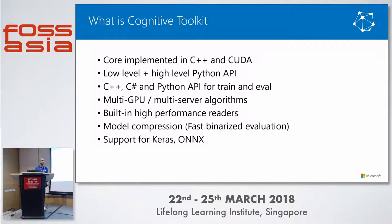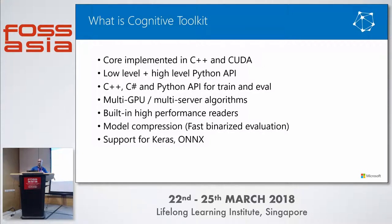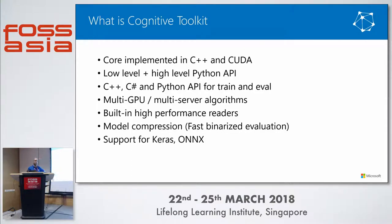CNTK is a C++ library leveraging CUDA, with high-level APIs in C# and Python — Python being the most commonly used. It allows you to run training jobs on multiple GPUs and multiple servers. It provides efficient data readers, model compression with binaries for evaluation, and supports Keras and ONNX as even higher-level APIs where the back-end library can be switched out.